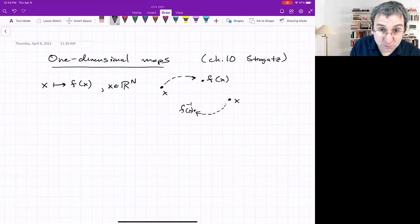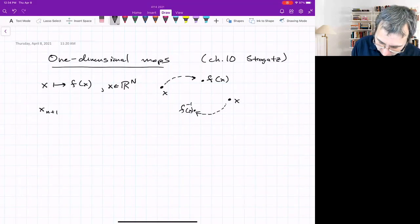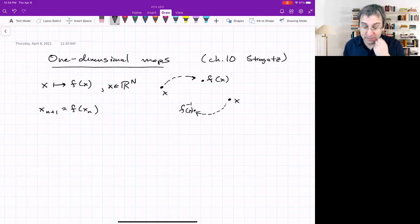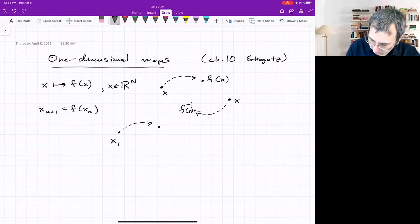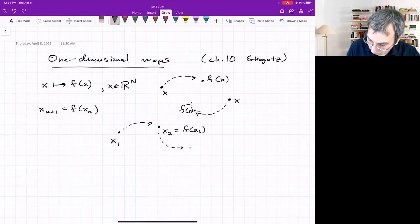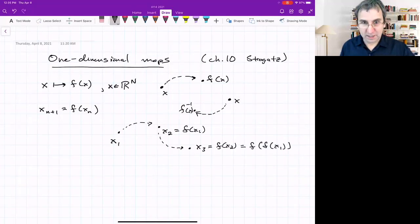It's often written this way, where we would say xn plus 1 equals f of xn. So it takes in a point, say x naught, as an initial condition and says, where does that go to? So if we have x1, it goes to x2, that's f of x1. And maybe that maps to x3, that's f of x2. And so it's f of f of x1, et cetera.